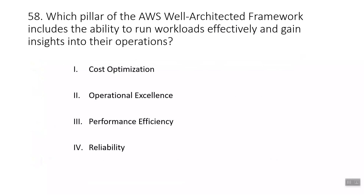Question fifty-eight: which pillar of the AWS Well-Architected Framework includes the ability to run workloads effectively and gain insights into their operations? The answer is operational excellence. Cost optimization focuses on delivering business value at the lowest price point. Performance efficiency focuses on using computing resources efficiently. Reliability focuses on the ability of a workload to consistently and correctly perform its intended functions.